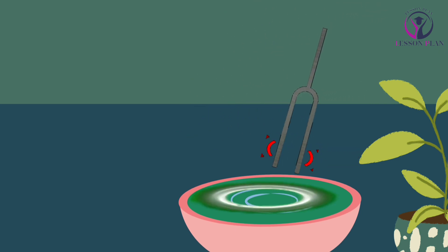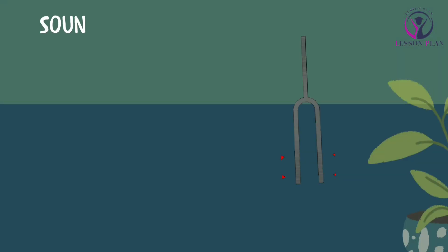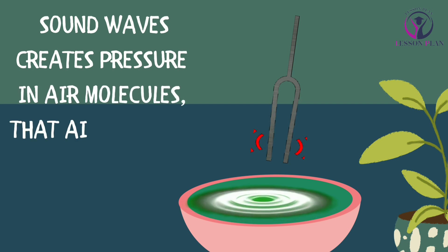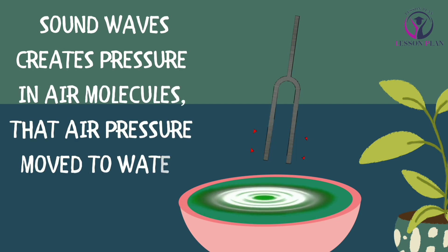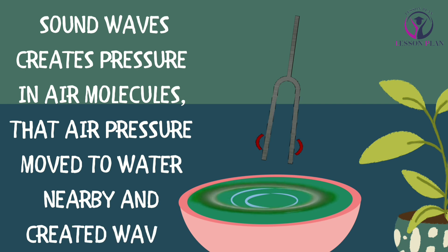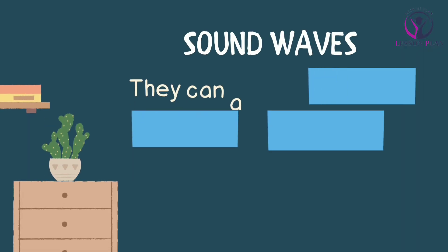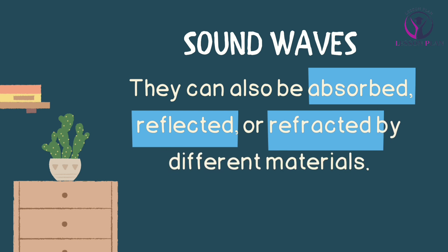Sound waves can create vibrations in different materials, and we can see this effect in action by using a tuning fork. A tuning fork is a small metal instrument that vibrates at a specific frequency when struck. If we hold a tuning fork above a water surface, the sound waves from the fork will create ripples in the water, demonstrating how sound waves can create vibrations in different objects.